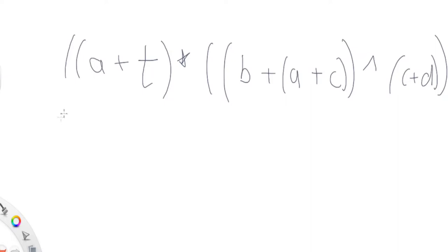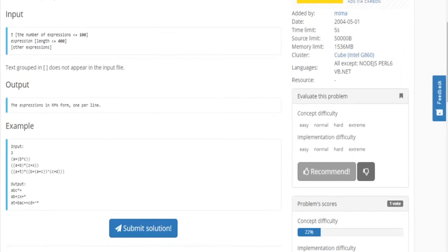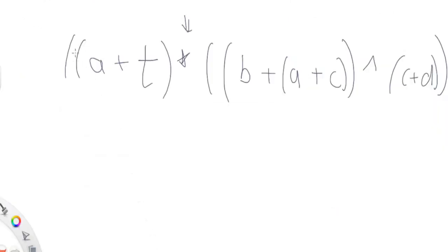Now let's look at the final test case. We first look at the outer parentheses, which gives us a multiplication at the end. But first we have to evaluate left to right — parentheses first. So let's look at the left parentheses and evaluate that first.